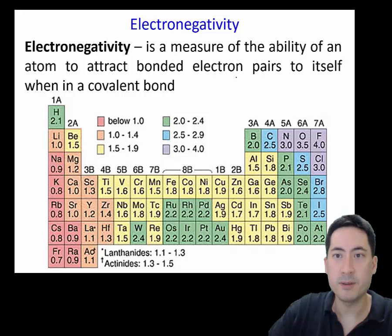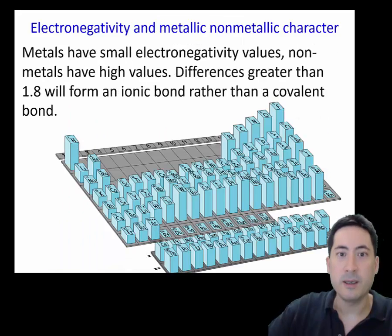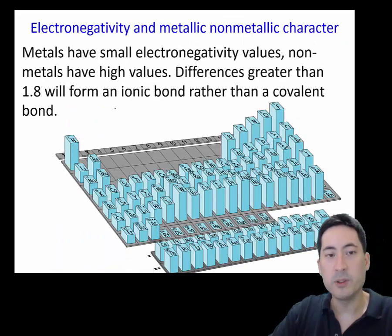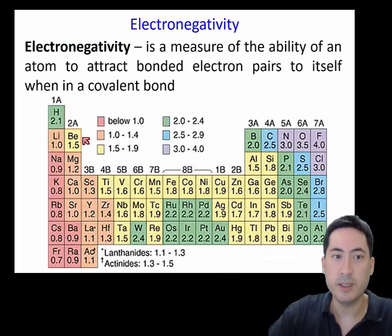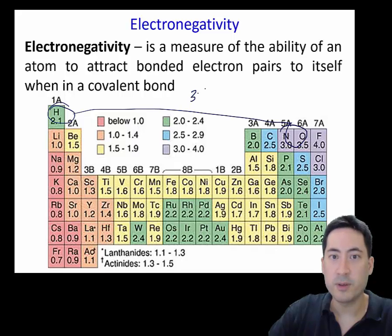Electronegativity is the measure of an ability of an atom to attract bonded electron pairs to itself in a covalent bond. Now we may as well just jump a little bit to topic 4. If the difference between them is 1.8, it will form an ionic bond. If it's anywhere between 0.4 and 1.8, it's polar covalent. So you can see from this table here, water. So if hydrogen 2.1 binds with oxygen, the difference 3.5 minus 2.1 is going to give you 1.4. And so that's going to be a polar covalent bond, but it's still going to be covalent.